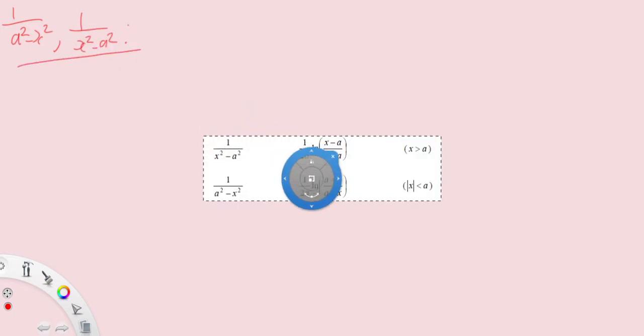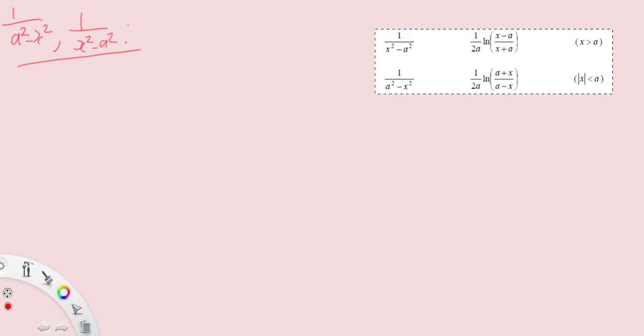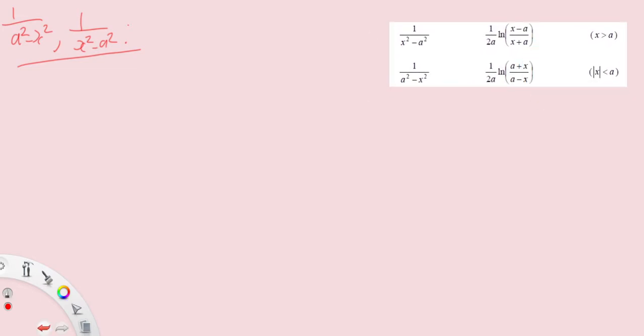Again the integrals are found in your MF26 as I'll drag it out right here. So we have 1 over 2a ln x minus a over x plus a or 1 over 2a ln a plus x over a minus x.